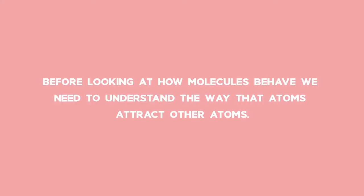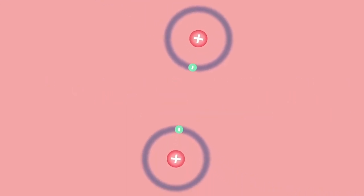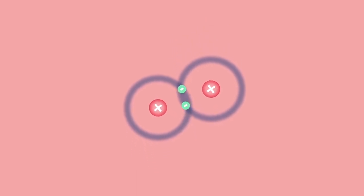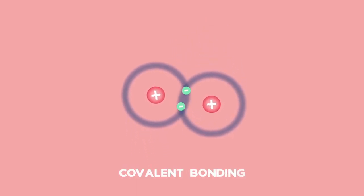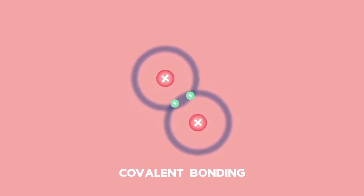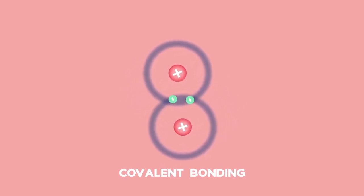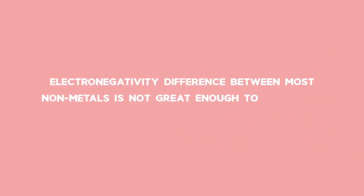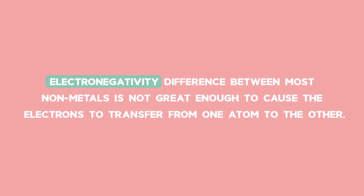Before looking at how molecules behave, we need to understand the way that atoms attract other atoms. Covalent bonding is a result of the sharing of valence electrons between atoms, and usually occurs between two non-metals. The reason for this is that the electronegativity difference between most non-metals is not great enough to cause the electrons to transfer from one atom to the other.